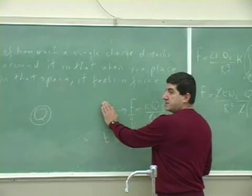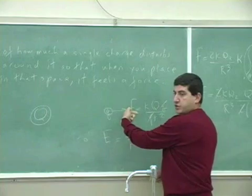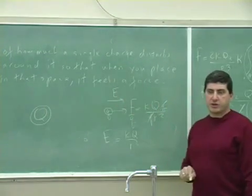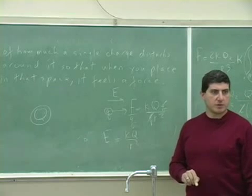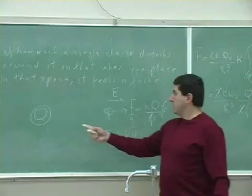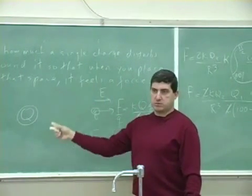So even if this thing is not there, the little q, this thing creates an electric field at that location, which is in that direction. So it's a measure of how much this thing distorts the space around it.